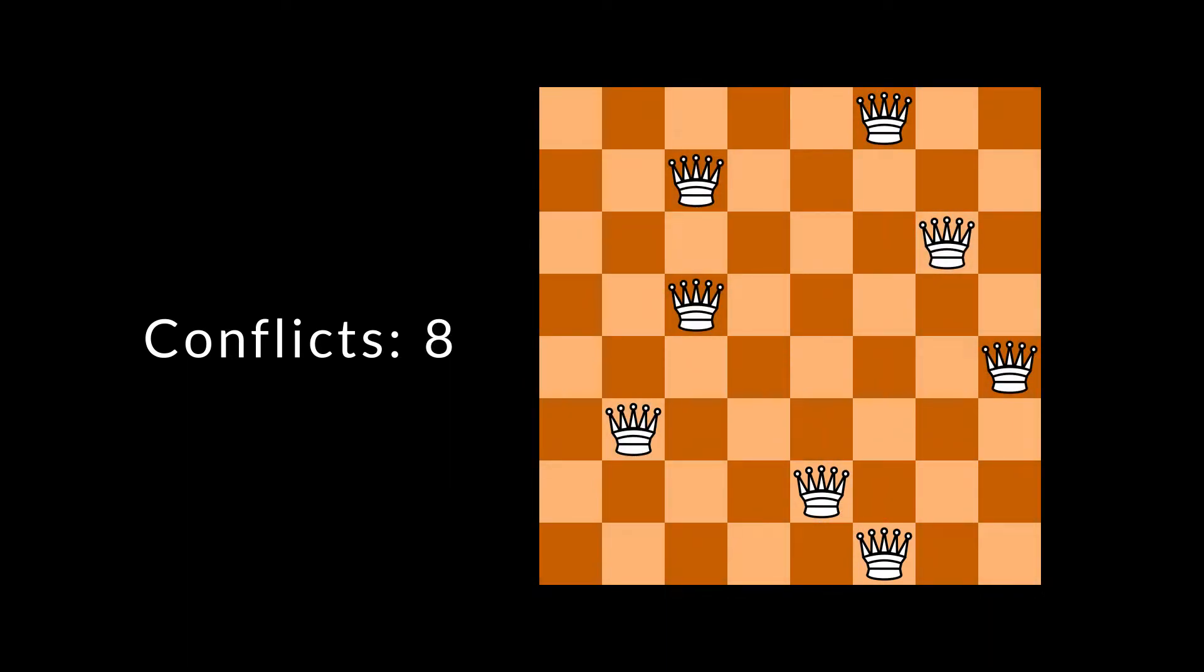The conflicts variable is equal to eight, but there are only four conflicts in total. We get twice the actual number of conflicts, because every conflict is counted twice, once from each queen. So in the end, we have to divide by two.